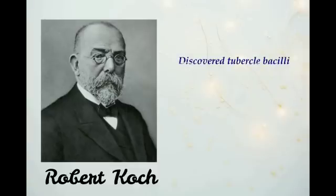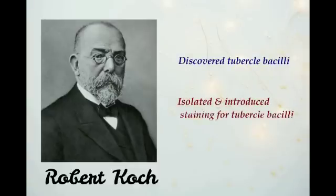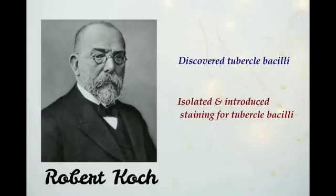It was on March 24, 1882 that Robert Koch announced that he had discovered the tubercle bacillus. He also isolated and introduced staining for the tubercle bacillus. Koch's postulates state: one, the germ had been identified; two, the germ had been isolated from the affected organism and grown in pure culture; three, the disease had been reproduced in an experimental animal from which the germ had been recovered.